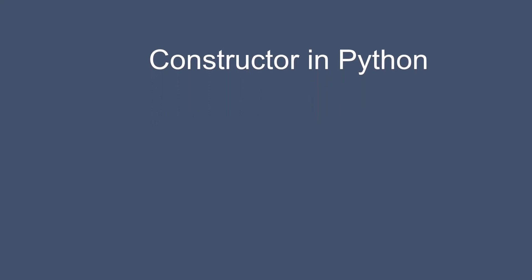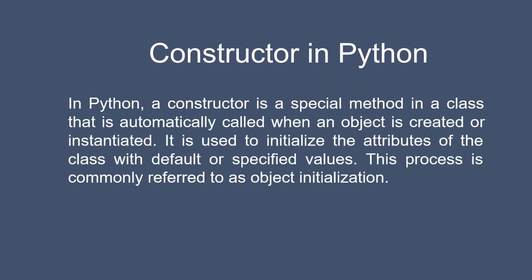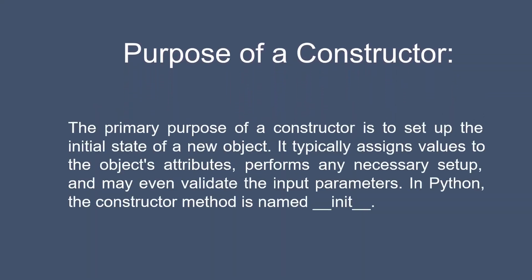In Python, a constructor is a special method in a class that is automatically called when an object is created or instantiated. It is used to initialize the attributes of the class with default or specified values. This process is commonly referred to as object initialization. The primary purpose of a constructor is to set up the initial state of a new object. It typically assigns values to the object's attributes, performs any necessary setup, and may even validate the input parameters.